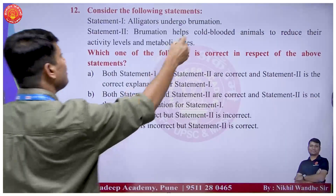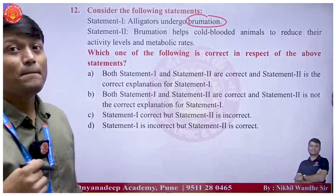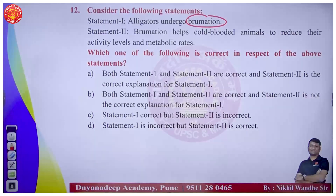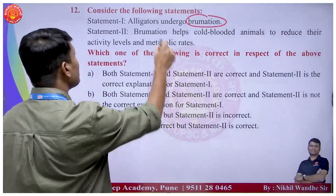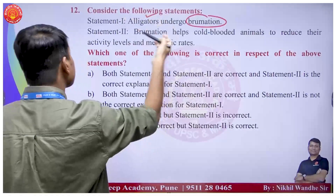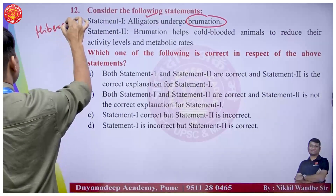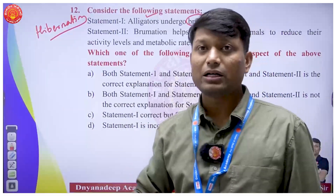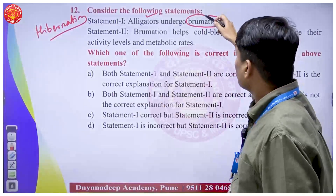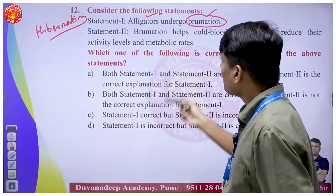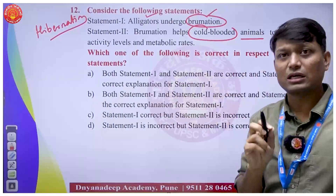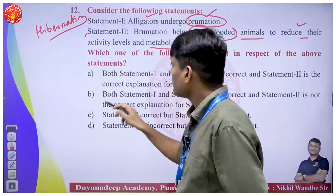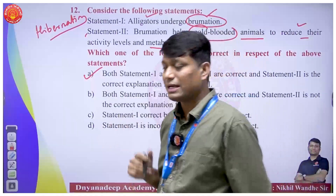Alligators undergo brumation - this term was in the news. Brumation is essentially hibernation for reptiles. Mammals hibernate, but for reptiles like alligators and crocodiles, they undergo brumation. In brumation, cold-blooded animals reduce their activity levels and metabolic rates. Both statements are correct and statement two is the correct explanation of statement one.